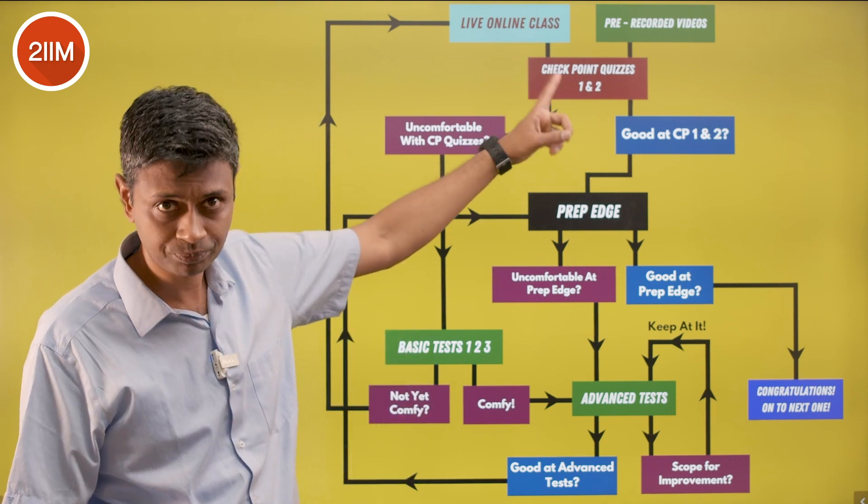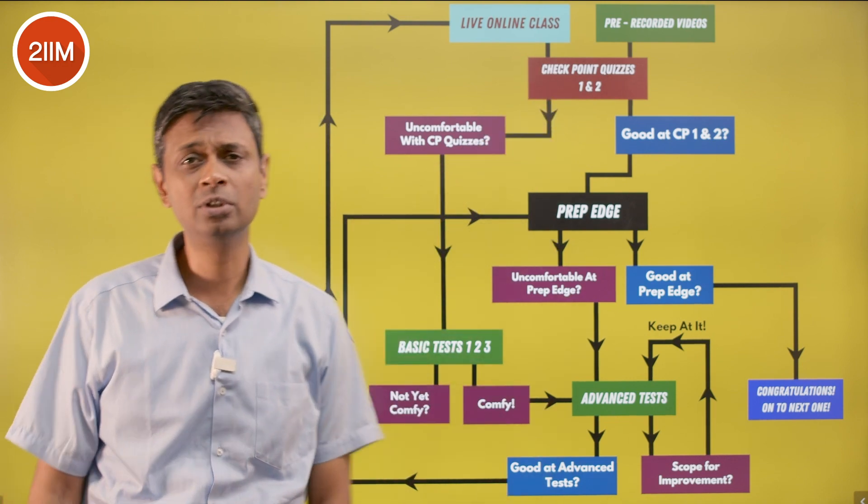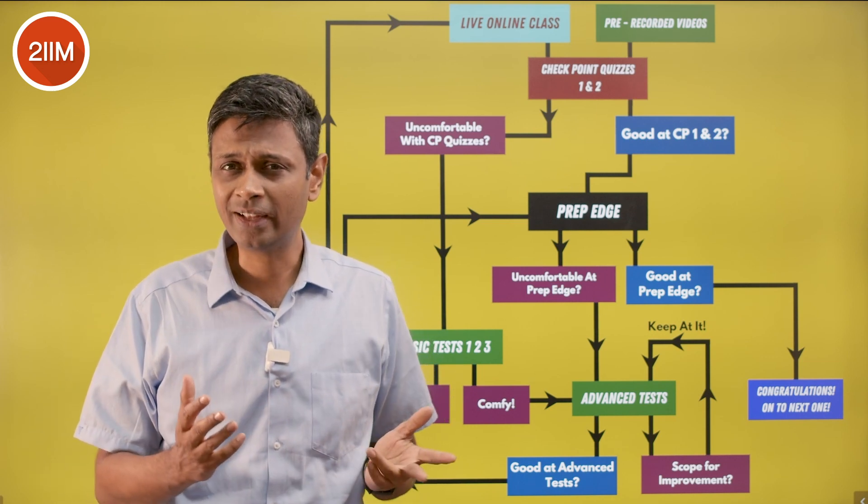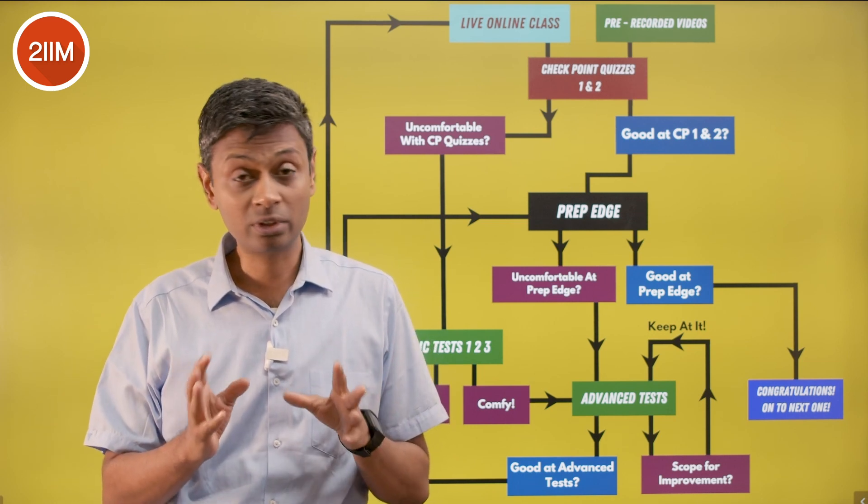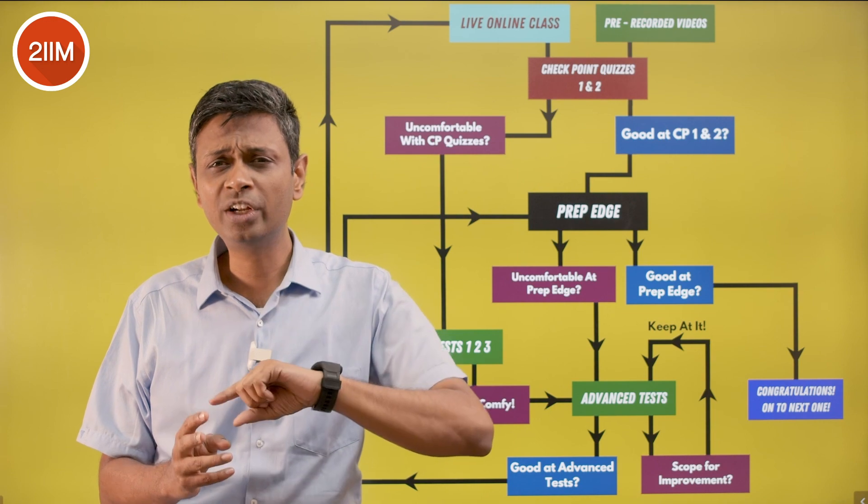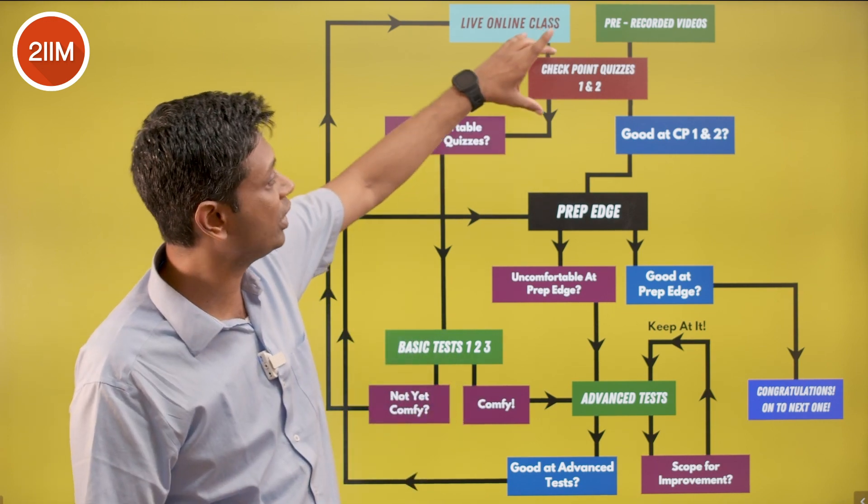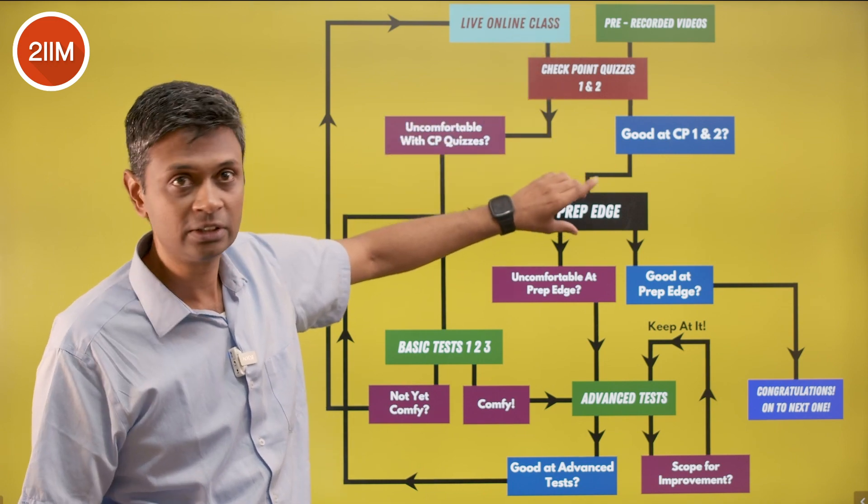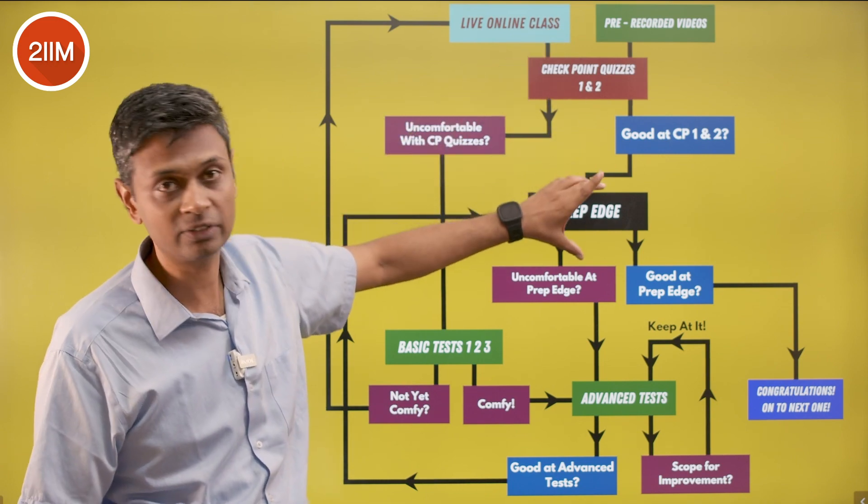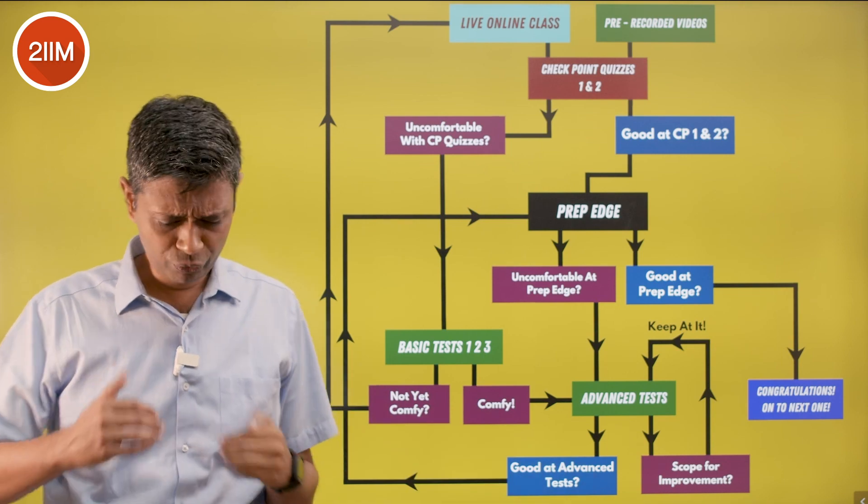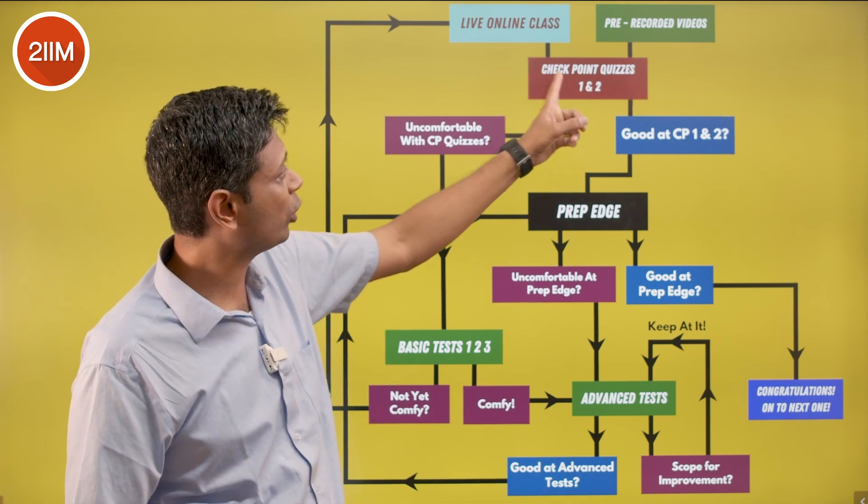What does our prep edge quiz do? Prep edge quiz says: hey, you got this idea, you seem to have cracked this, you're on reasonably good ground - are you ready for the level of questions you can expect in the exam? This is consolidation, this is benchmarking. This is basic, this is CAT level.